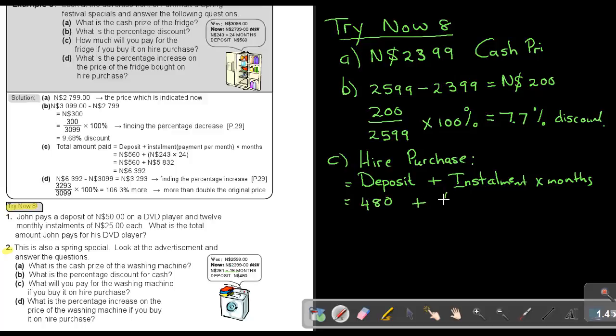The installment is $281, multiplied by 18 months. This gives a total of $5,538.